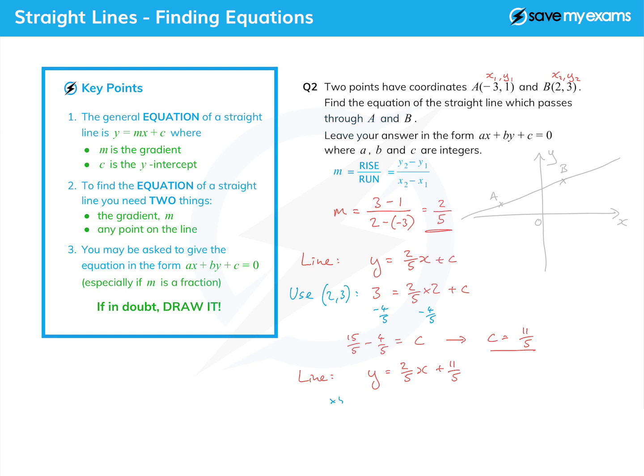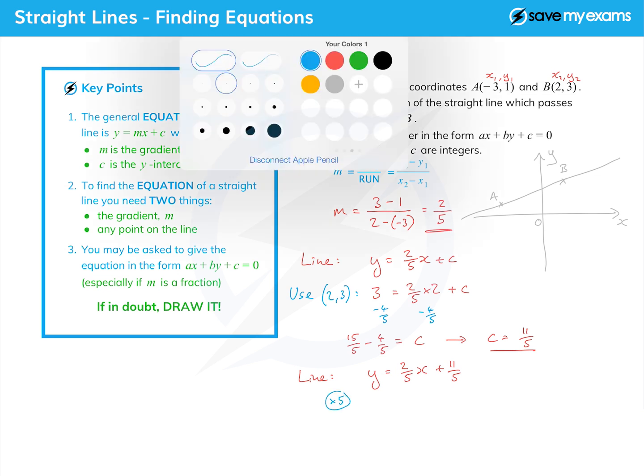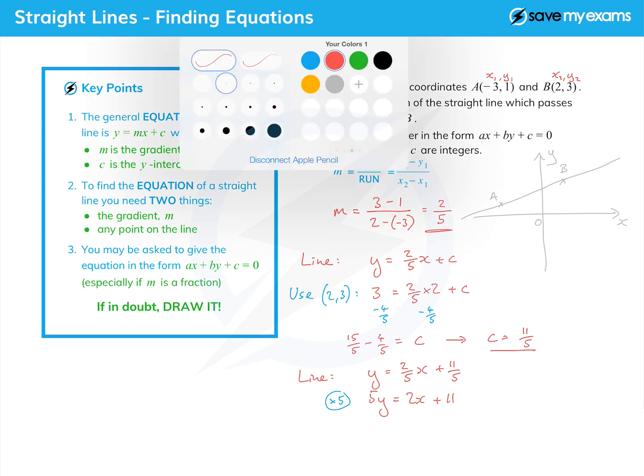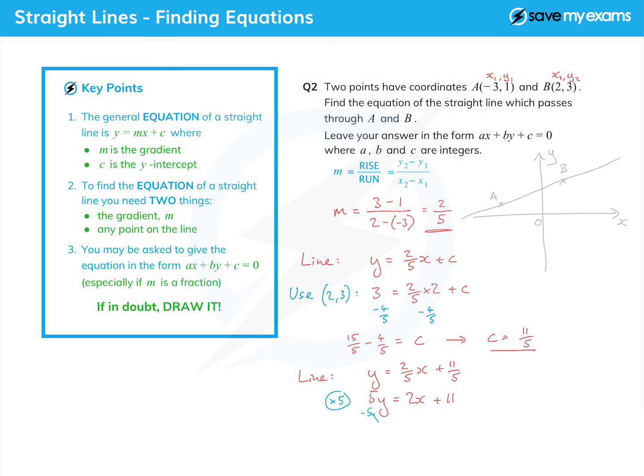So how do we get it in that form? We multiply through by the bottom. There's only one bottom here, so we multiply through by the denominator, which is 5. So we get 5y on the left, 2x and 11 on the right. And then we just need to do one more thing, which is put it all on one side. So I'm going to subtract 5y from both sides and get zero equals 2x minus 5y plus 11. It doesn't matter that my zero is on the other side; if you want to cross it out and put it over on the right, that would be fine.